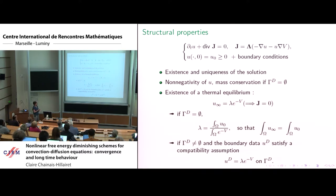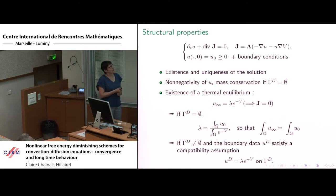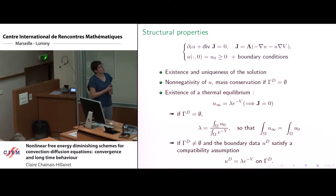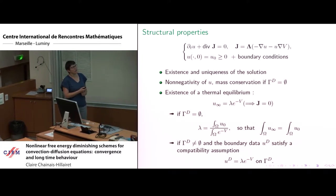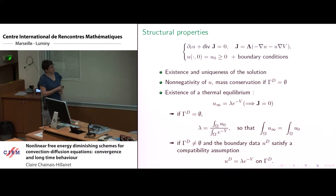A thermal equilibrium is a steady state for which the current vanishes. In practice, with the form of the current J, if you choose U_infinity as a constant times exponential of minus V, the current vanishes and it is a steady state to this equation in different cases.